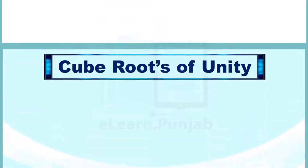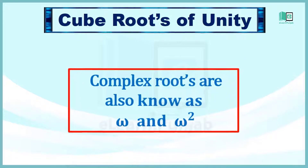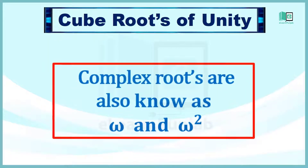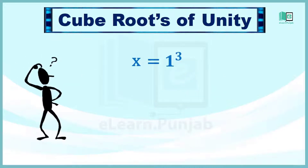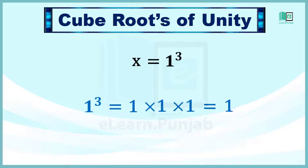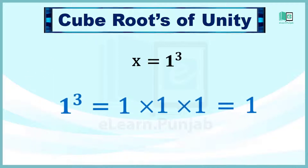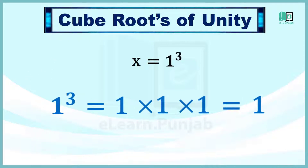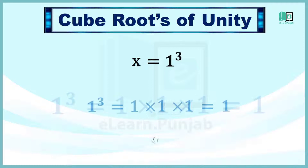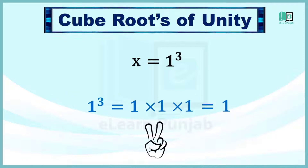इन complex roots को omega या omega square में पहचानेंगे। आपके जहन में सवाल आएगा कि वन का क्यूब तो simply वन ही होता है, क्योंके वन multiply roots में से एक है। लेकिन इसके इलावा भी इसके दो और roots भी हैं। चलें इन roots को find करते हैं।